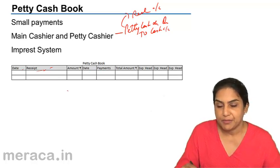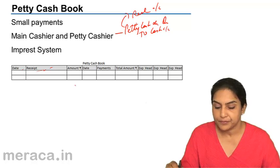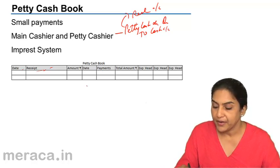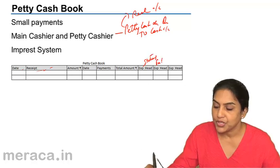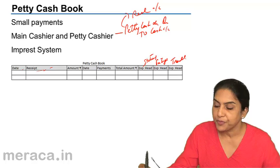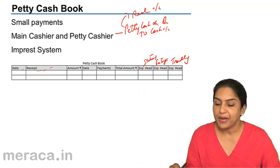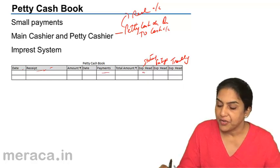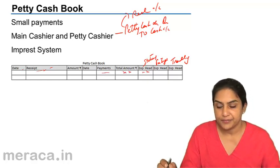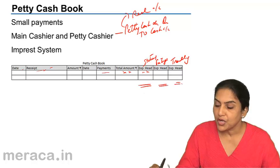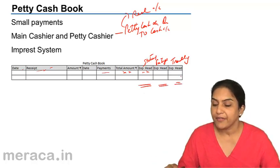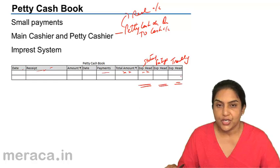Date and payments — what is the nature of the payment here? The expenditure head may be stationery, postage, traveling — this would be the heading. So whatever payment is made, we write the detail here, fill the amount here, write the total here, and so on. We know the total amount spent, and the totals of each column will tell us the total traveling, the total postage, or the total stationery, or whatever expenses for that particular period.